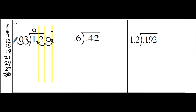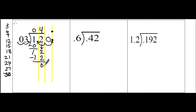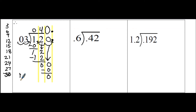0 times 3 is 0, and 1 minus 0 is 1. Then we combine with the next column by bringing the 2 down. 3 goes into 12 four times, and 4 times 3 is 12 with 0 left over. We combine with the next column by bringing this 0 down. 3 goes into 0 zero times. Since there's an empty space between the 4 and the decimal, we need another digit there. So our final answer is 40 whole times — 3 hundredths goes into 1 and 2 tenths 40 times.